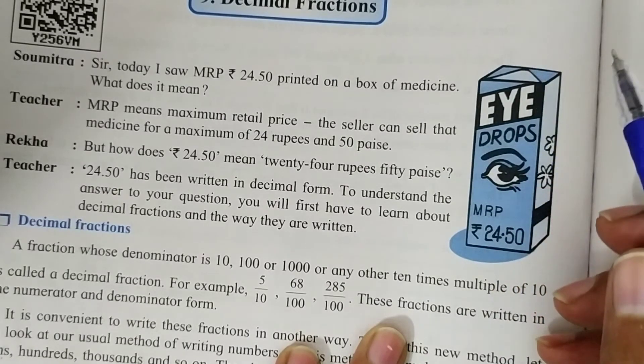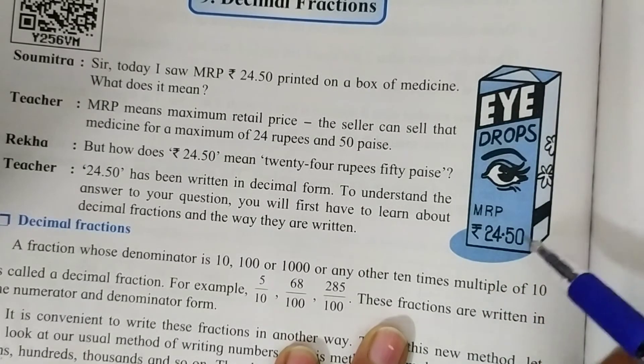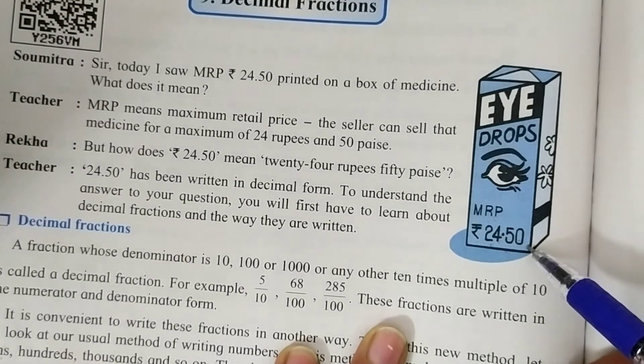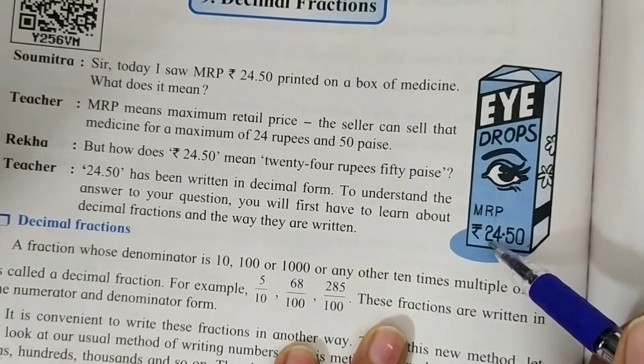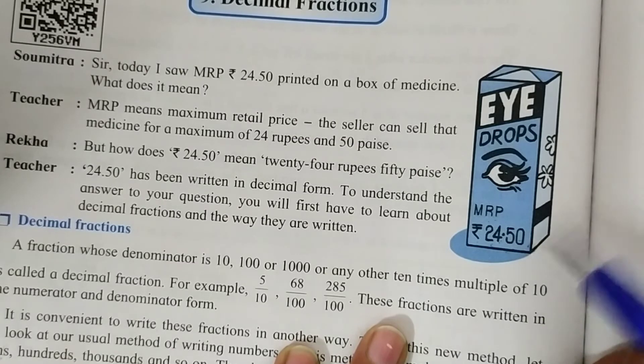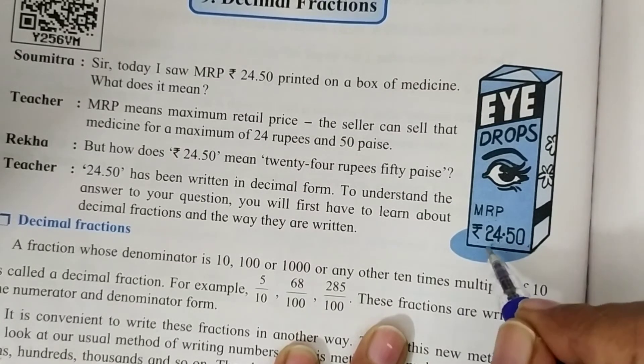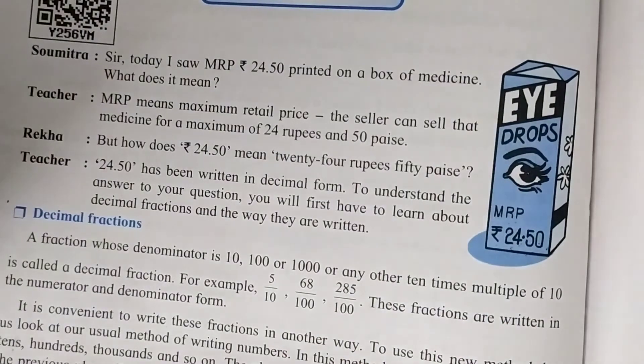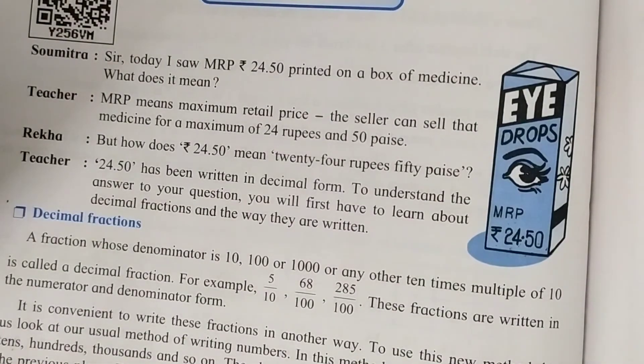Look at the picture shown here. This is the picture of eye drops medicine. Here they give us MRP rupees 24 point 50. This is 24 rupees and 50 paise. It is written in decimal form. This is called the decimal form of decimal fraction.